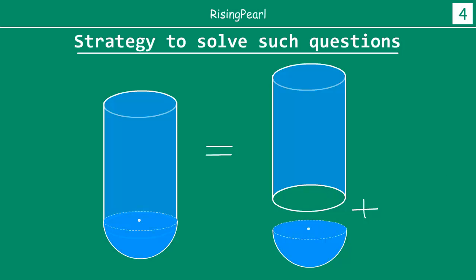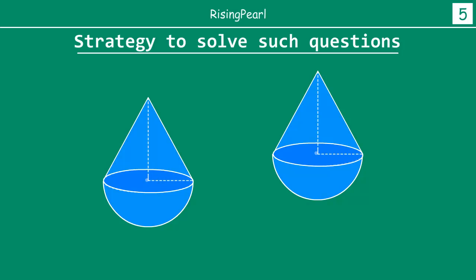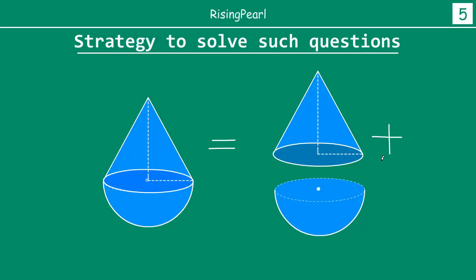Let's take one final example. Say you have a shape like this. Your mind should be able to immediately see this shape as a combination of a right circular cone plus a hemisphere.